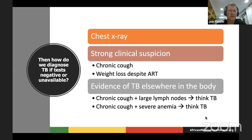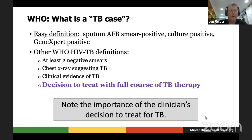Sometimes patients or clinicians are quite reluctant to start TB treatment, which is understandable because it has side effects and is a six-month treatment course. But the WHO's definition of TB is actually a decision to treat with a full course of TB therapy — that puts the responsibility in the hands of the clinician to make a decision to treat, and then that is a TB case. To give you a sense that that's not unreasonable: TB trials define either 'definite TB' — found microbiologically — or 'probable TB' — somebody went on TB treatment and responded. So really the onus is on the clinician to pull that trigger.